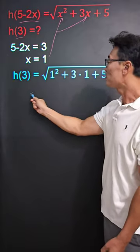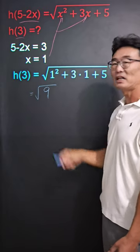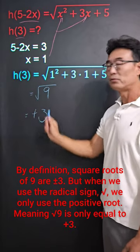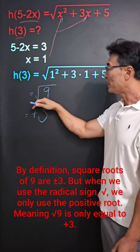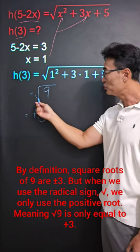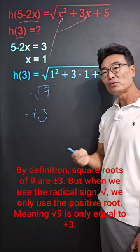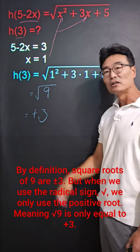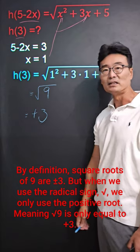And if we simplify this, this will equal square root of 9, and that's going to equal plus 3. Remember, folks, when you take the square root of a number using the radical sign, we always use only the principal root or the positive root, not the negative root.